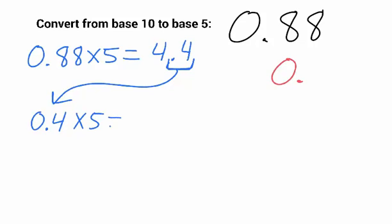Multiply that by 5, also get 2.0. And now I look after the decimal, and I see that there's only a 0, so I stop right there. That's the end of the process.